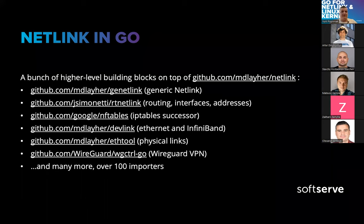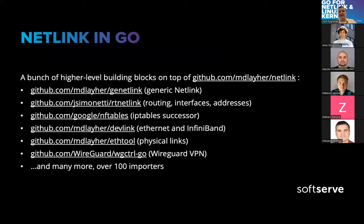The second library was created by Matt Lawyer from DigitalOcean. It's not as popular, but it's definitely the most powerful foundation library to build on top of. It's a low-level library with a super simple and clear Go API — you don't even need to look at the sources to understand what's happening. There are a lot of building blocks already implemented: a generic Netlink library, rtnetlink by JS Monetti for routing, interfaces and addresses, the nftables library created by Google, devlink by Matt for Ethernet and InfiniBand management, Ethernet tools, WireGuard VPN, and many more. On Go Docs you'll find more than 130 importers — meaning this library is really extensible.